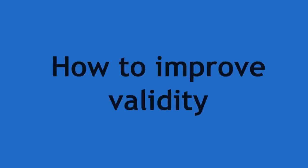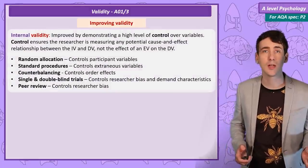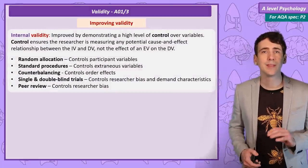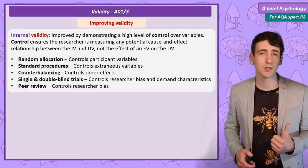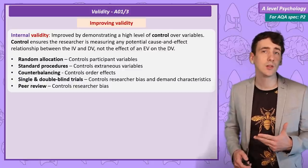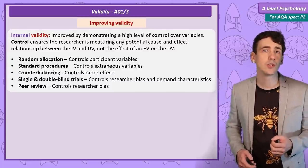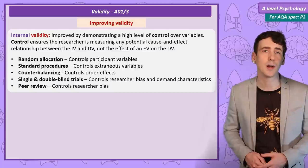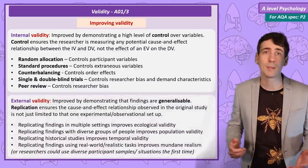To improve internal validity — which is about confirming a cause-and-effect relationship between the IV and DV by excluding extraneous variables — techniques covered in the variables video include random allocation, standardised procedures, counterbalancing, single and double blind designs, and effective use of the peer review system. These should reduce the chance that results are due to bias or poorly controlled experiments. External validity can be improved mainly through replication.